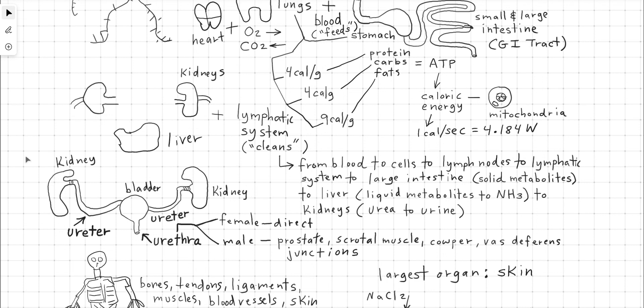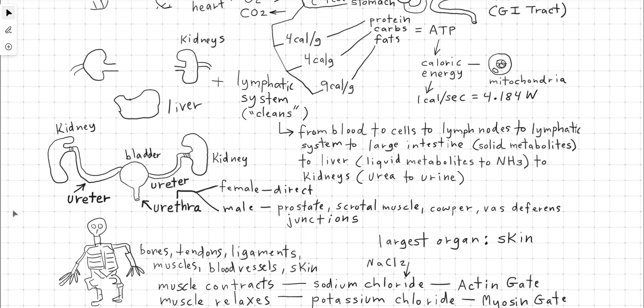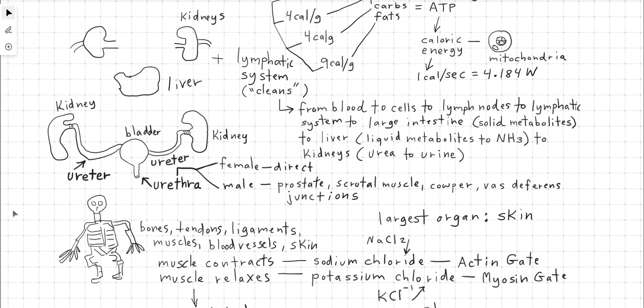The liquid metabolites flow to the liver and are converted to NH3 ammonium, which then flows to the kidneys, which then converts the ammonium into urea. We have the kidneys, which are connected to the bladder through the urethras, and then the bladder out through the urethra for excreting liquid waste. The urethra is split up into the male and female urethral tract, which has various junctions slightly more complex in the male versus more of a direct flow for the female. This is relevant to mammalian physiology, in this case, human mammalian physiology.